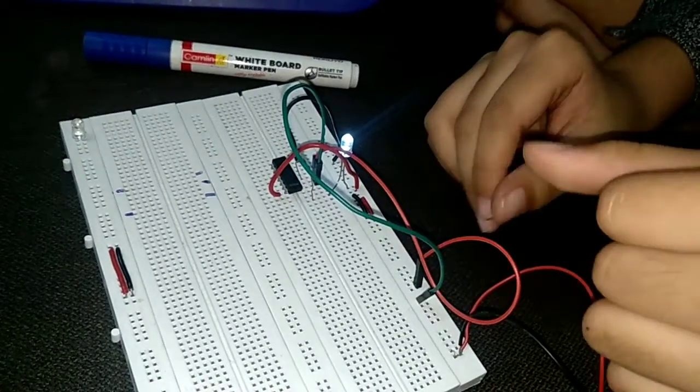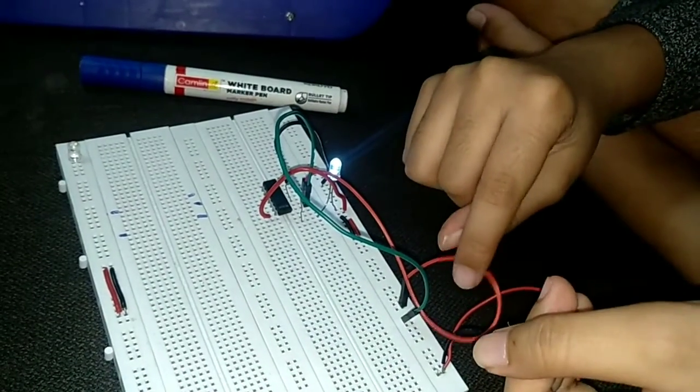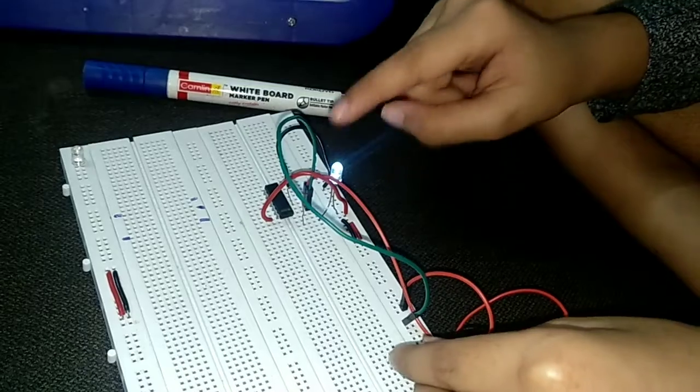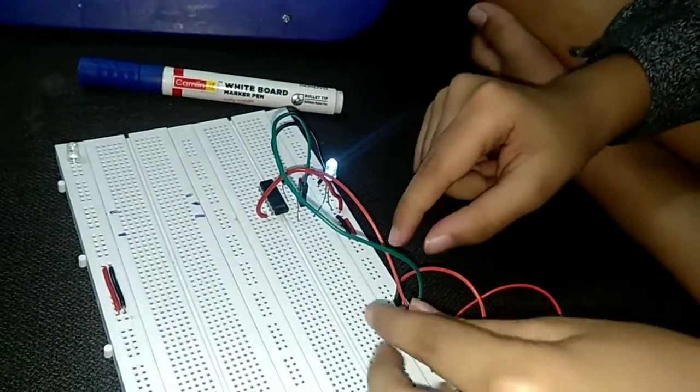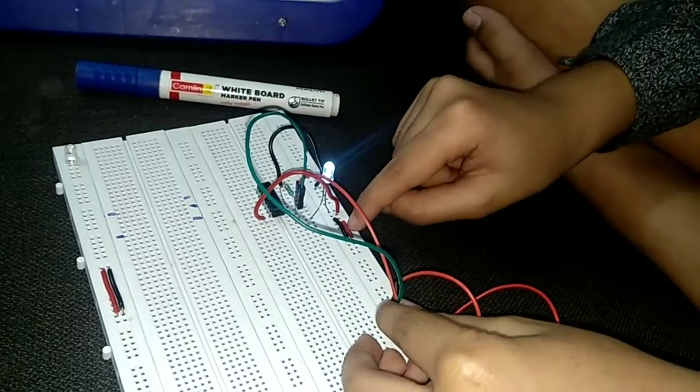Now I am going to connect one input. Now I am going to connect it to the plus and then the LED glows. When the LED glows, now I am going to connect it to the bottom row.